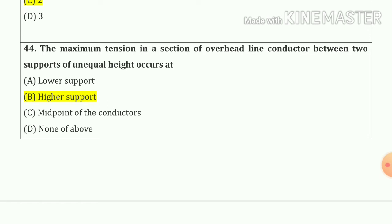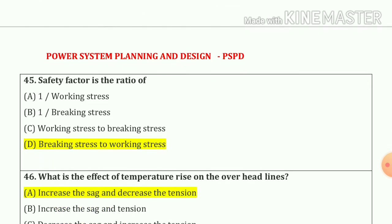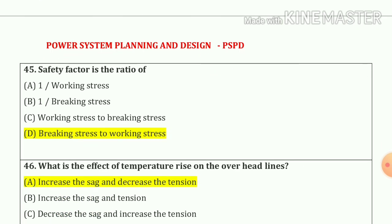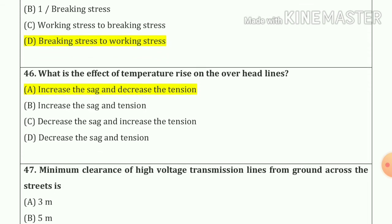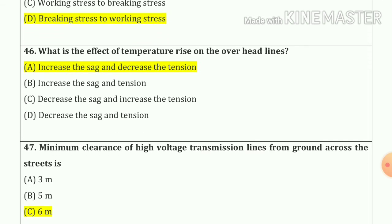Question number 44: the maximum tension in a section of overhead line conductor between two supports of unequal height occurs at the higher support — option number B. Question number 45: safety factor is the ratio of breaking stress to working stress — option number D.